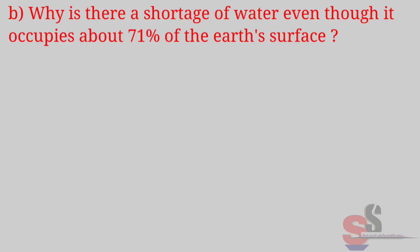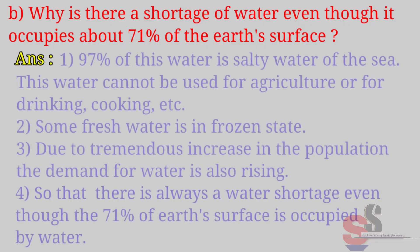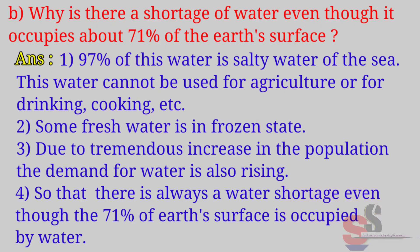All these factors cause soil formation in a very slow and continuous way. B. Why is there a shortage of water even though it occupies about 71% of the earth's surface? Answer: 97% of this water is salty water of the sea, which cannot be used for agriculture, drinking or cooking. Some fresh water is in frozen state. Due to tremendous increase in population, the demand for water is also rising, so there is always a water shortage.